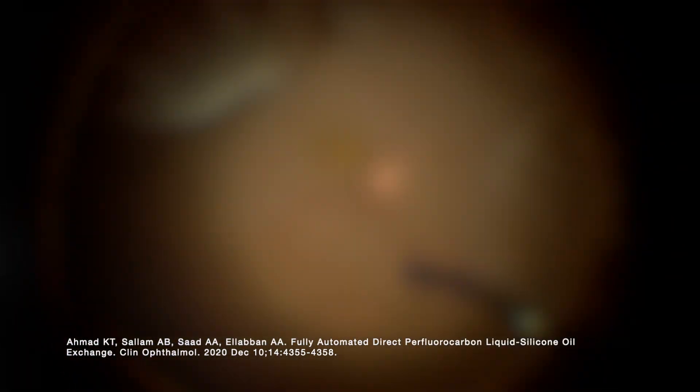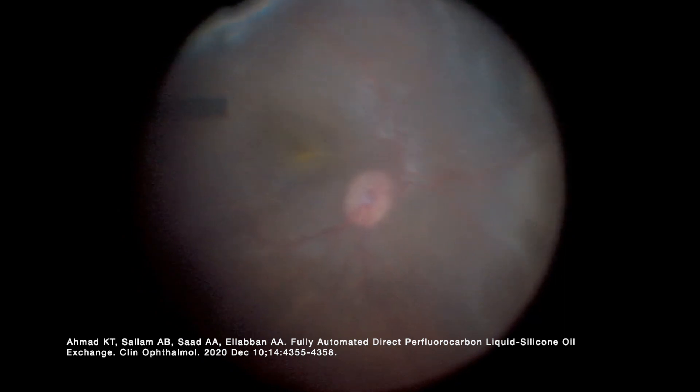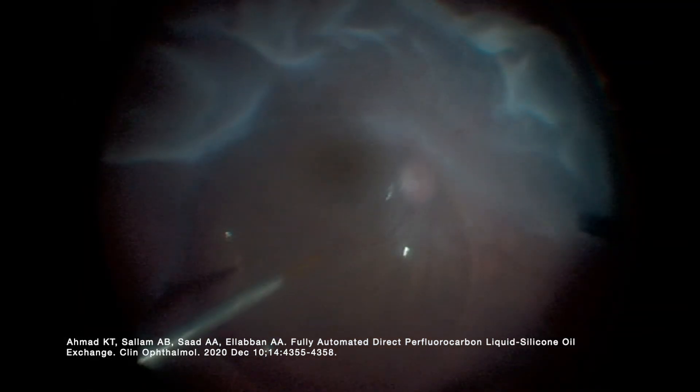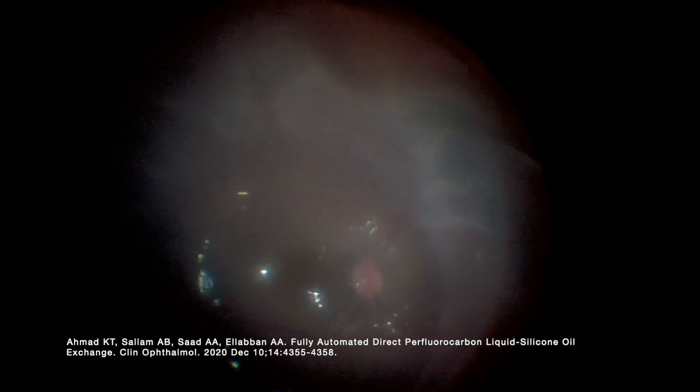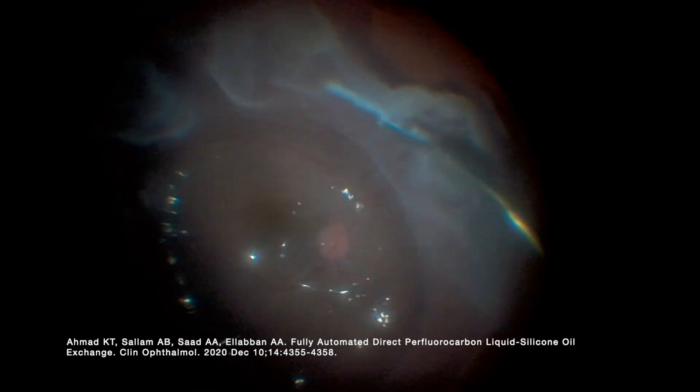This is the first case of 25 gauge vitrectomy for a giant retinal tear with PVR. We stained with blue dye but we didn't see any significant ERM to peel. Probably immature membranes anteriorly, not much to peel.